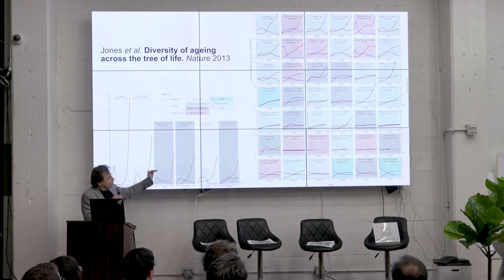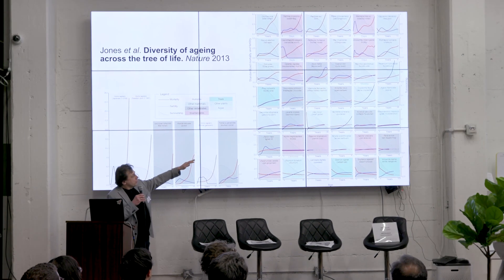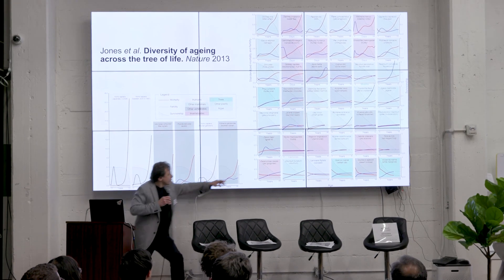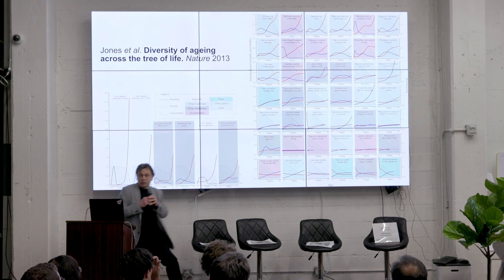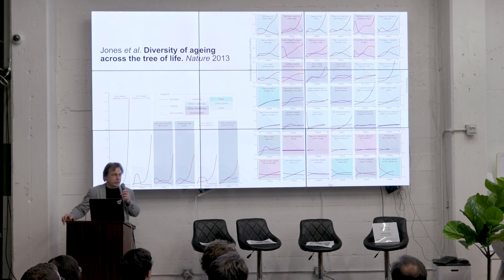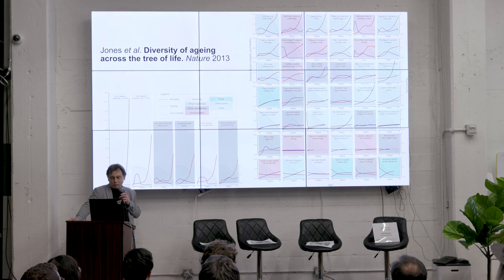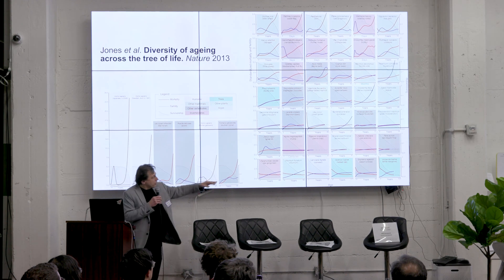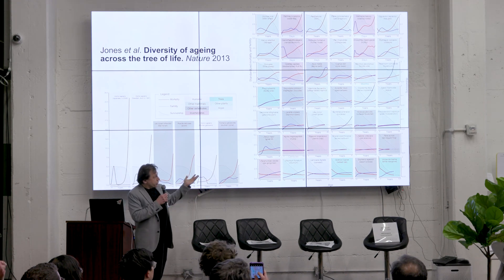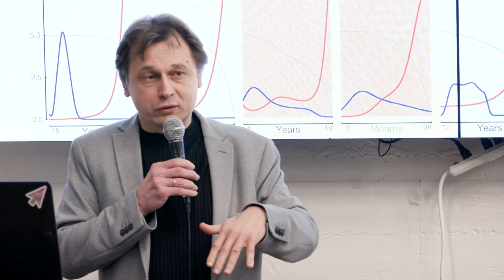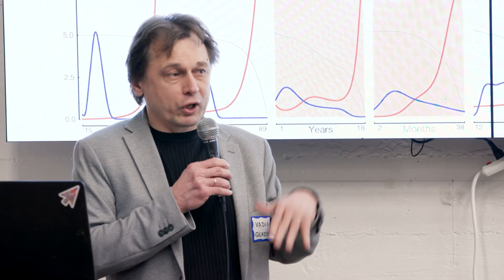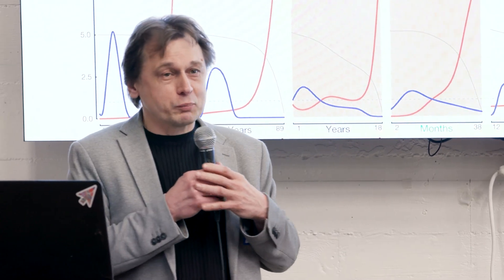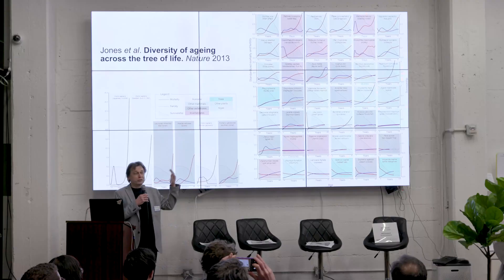For example, if you look at the hydra — second row from the bottom — mortality does not change with age, and reproduction also does not change with age. And if you look at other species on the bottom, you can see even stranger patterns where mortality actually drops with age. So organisms chronologically age, but mortality decreases and reproduction increases.